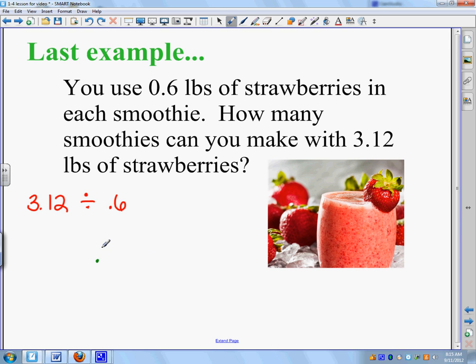All right. So, 0.6 has to go on the outside, division bar, and then 3.12. I can't have a 0.6, so I need to move my decimal one spot. I need to move it one spot here. Don't try to do 6 into 312. Just do 6 into 31, which is 5.